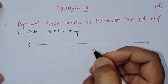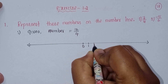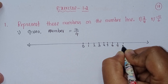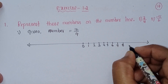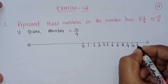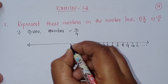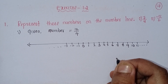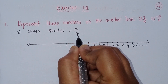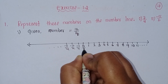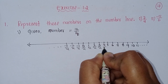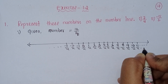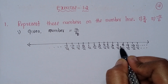On the number line: 0, 1, 2, 3, 4, 5, 6, 7, 8, 9, 10, 11, and so on, and minus 1, minus 2, minus 3, and so on. Positive side is on the right. Now, 7 by 4 — the denominator is 4, so divide each unit into 4 equal parts.